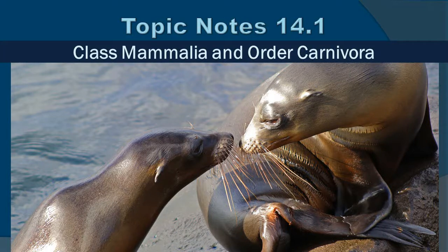Topic notes 14.1: Class Mammalia and Order Carnivora. We finally get to talk in depth about marine mammals, starting with what a marine mammal is and then Order Carnivora. This picture shows two sea lions — I took this in the Galapagos Islands in San Cristobal. It was not a trained behavior; these two just happened to do it and I caught it in a split second.